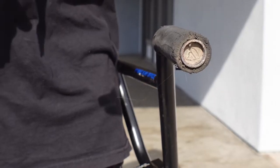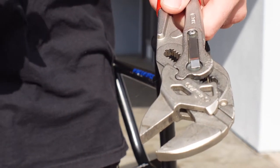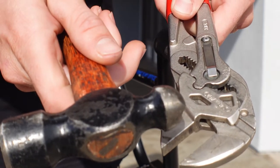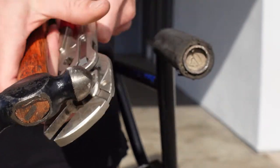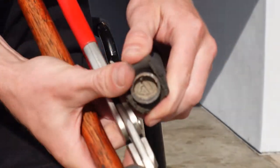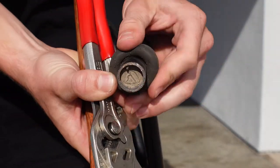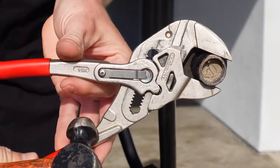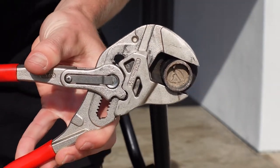So there's a couple ways you can do this. You can use channel locks and a hammer and simply pull your grip back and put the channel locks on the end like so.